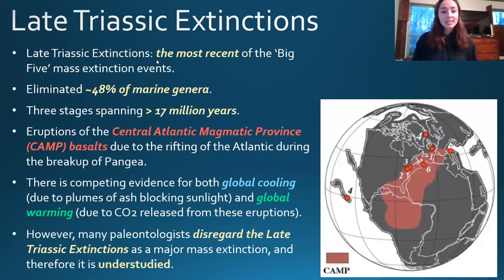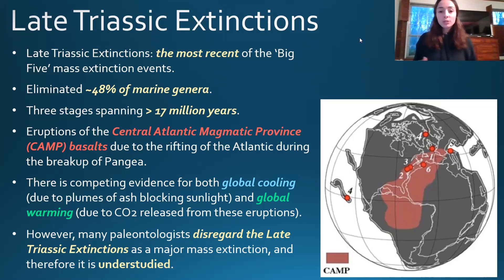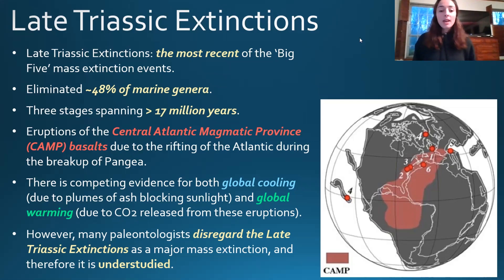The last major extinction event is the Late Triassic extinction, which eliminated about 48% of marine genera and spanned over 17 million years with three stages. It is thought that the Central Atlantic Magmatic Province, or CAMP basalts, began erupting due to the rifting of the Atlantic during the breakup of Pangaea. There is competing evidence for both global cooling — from ash plumes blocking sunlight — and global warming from CO2 release. Some think both climate changes happened in rapid succession, causing rapid climate change that species couldn't keep up with. However, many paleontologists disregard the Late Triassic extinctions as a true mass extinction, thinking it may be a statistical anomaly in the data, and it remains understudied.